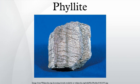The minute crystals of graphite, sericite, or chlorite, or the translucent fine-grained white mica, impart a silky, sometimes golden sheen to the surfaces of cleavage, called phyllitic luster.